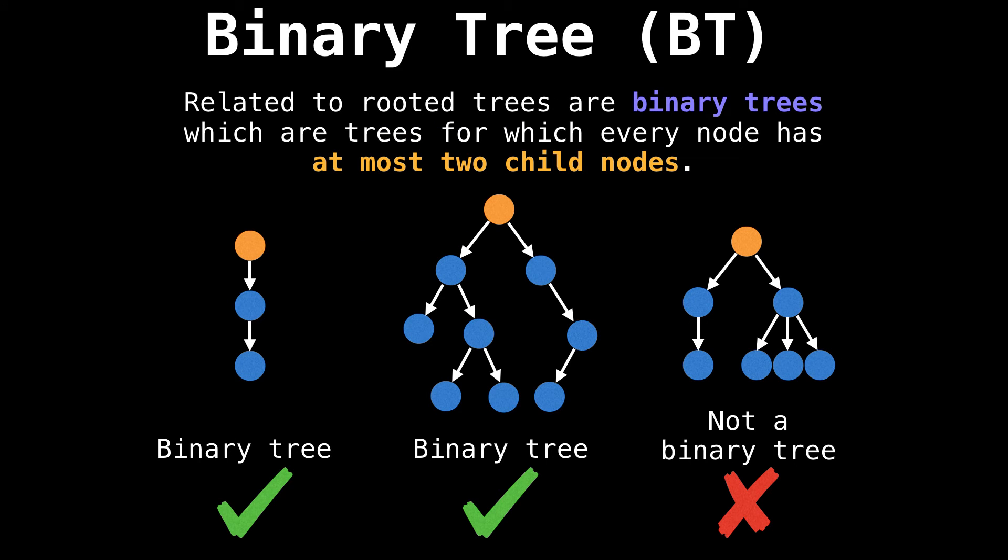Related to rooted trees are binary trees, which are trees for which every node has at most two child nodes. The first two trees on this slide are binary trees, but the last one is not because it has a node which has more than two child nodes.